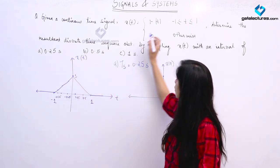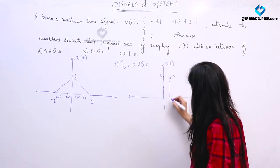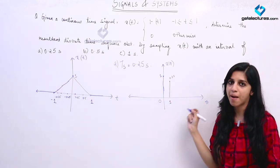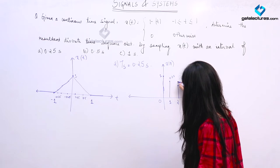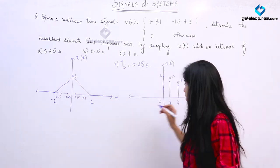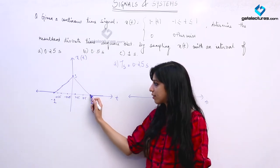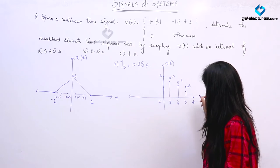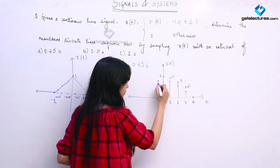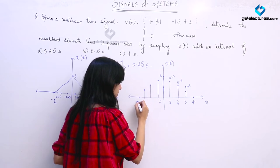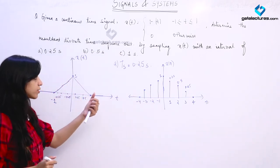Next sample is at t = 0.25 (n = 1), whose value is 0.75. The second sample at t = 0.5 has value 0.5, and the third sample at t = 0.75 has value 0.25. If we take a sample at t = 1, this is the fourth sample with value 0. The same is repeated on the negative side. This is how the discrete time signal looks for sampling interval 0.25s.